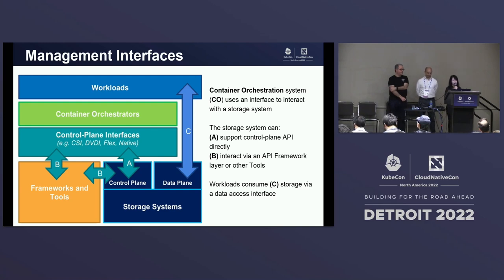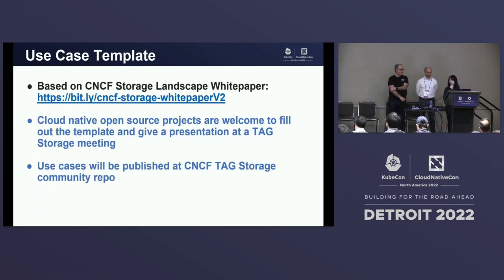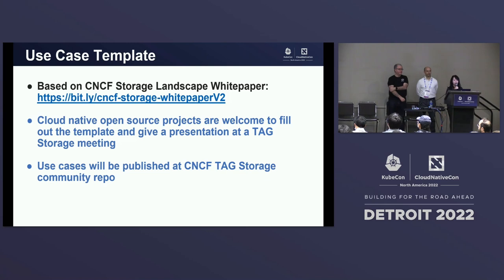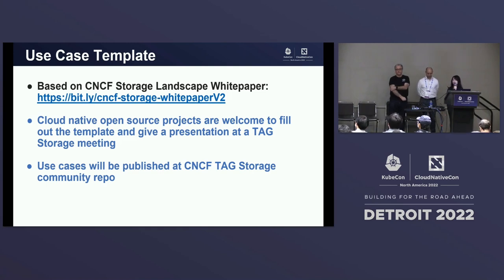That covers the storage landscape white paper. Now I'm going to talk about a new initiative we just started in TAG Storage. We're working on the CNCF storage landscape white paper — it's still a work in progress, but once it's ready we want to invite cloud-native open source projects to fill out a template, give a presentation at the TAG Storage meeting, and eventually we will publish those use cases at our GitHub repo.